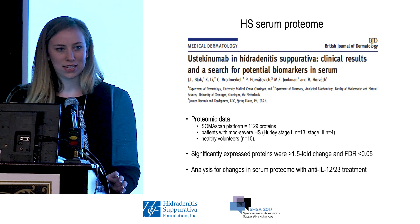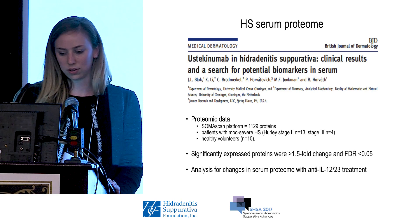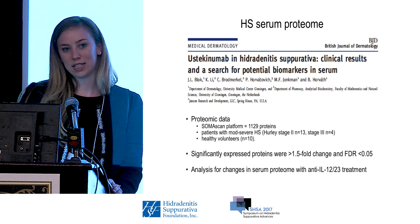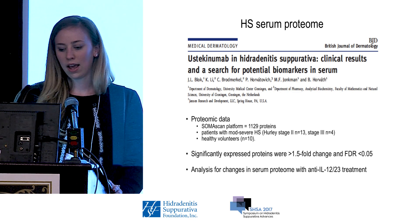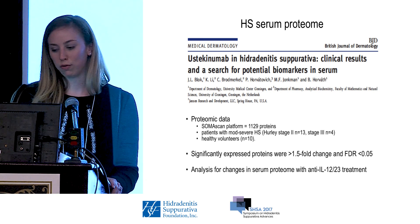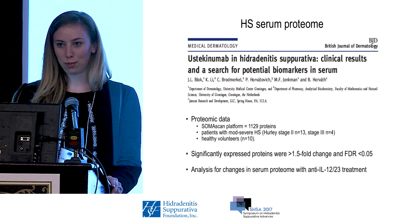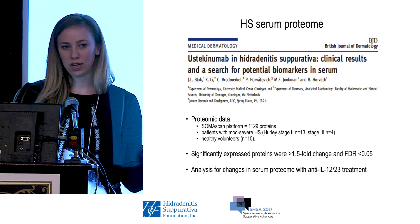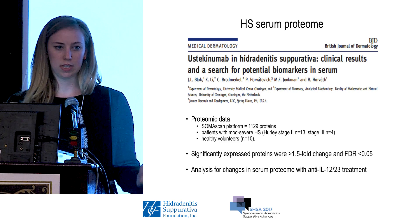They had 17 patients who had moderate to severe HS, and they compared this to 10 healthy controls. For the Suarez-Fariñas lab, we did a reanalysis of the serum proteomic data and tried to determine if there were significantly expressed proteins with greater than 1.5-fold change and a false discovery rate of less than 0.05. We also looked at patients who had been treated with Eustin-Echinimab to see if there were any changes in their serum proteome.